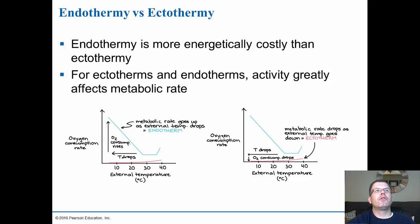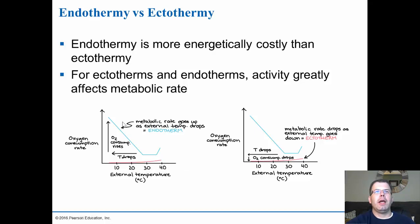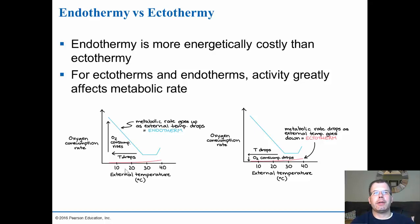Endothermy is more energetically costly than ectothermy because endotherms must maintain their internal temperature regardless of external conditions. The colder the environment, the higher the endotherm's metabolic rate must go to maintain body temperature. For ectotherms, it's the opposite — their metabolic rate drops as external temperature drops, and they slow down because they don't need to maintain internal heat. As an ectotherm's environment cools, it slows down; as an endotherm's environment cools, its metabolic rate goes up.